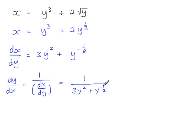To get rid of the negative index here, I multiply by y to the power of a half over y to the power of a half, and something divided by itself is equal to 1, so I'm not changing the derivative by multiplying by 1. So 1 times y to the power of a half gives the numerator.